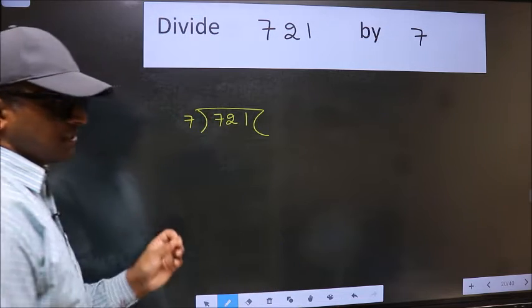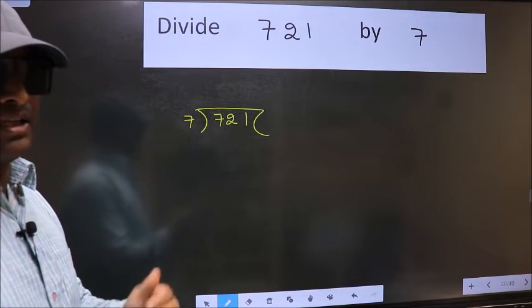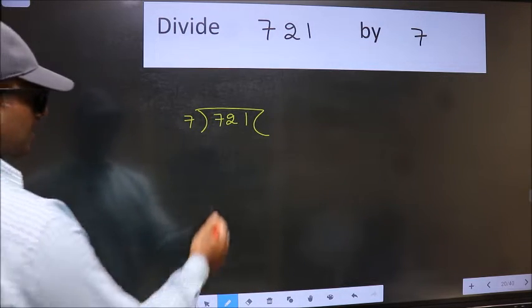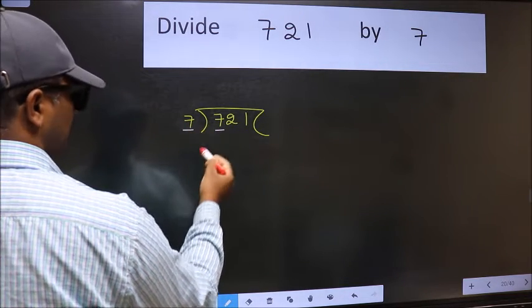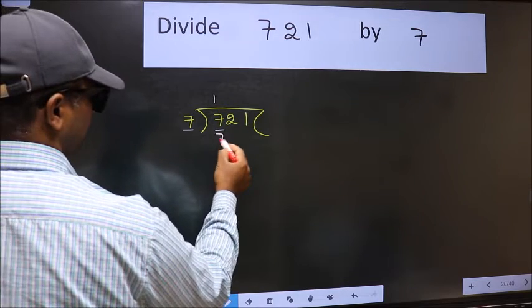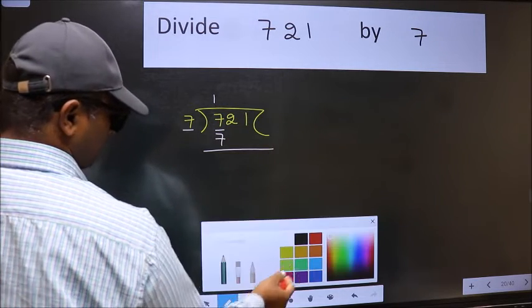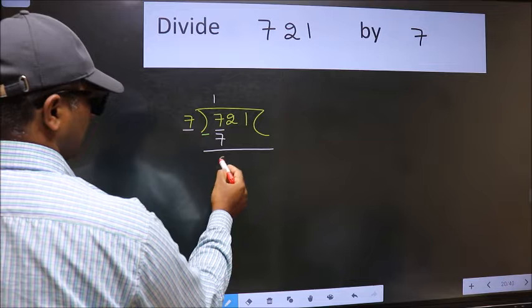This is your step 1. Next, here we have 7 and here 7. When do we get 7 in the 7 table? 7 once 7. Now we subtract and get 0.